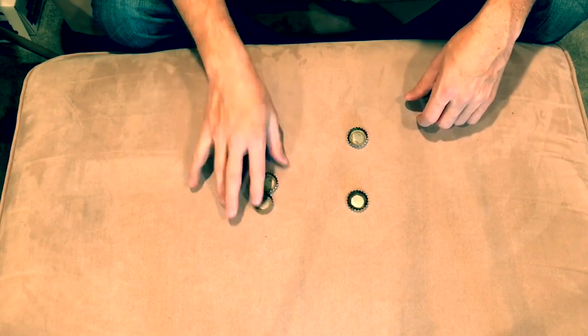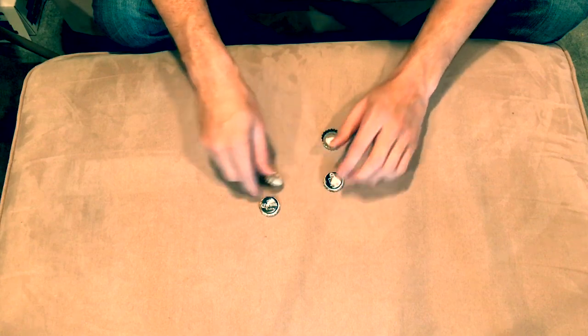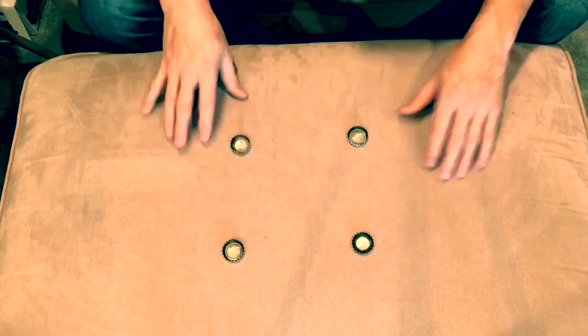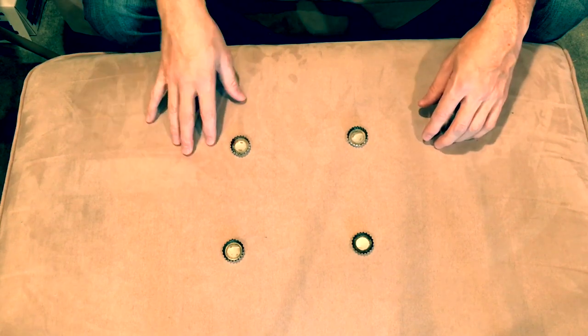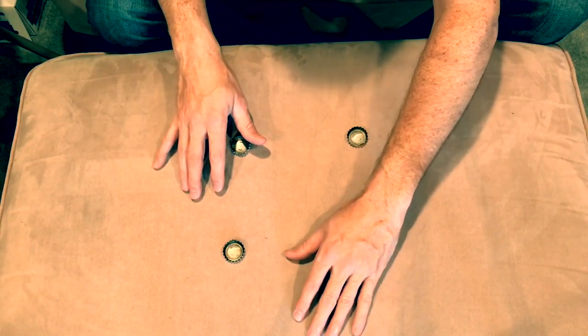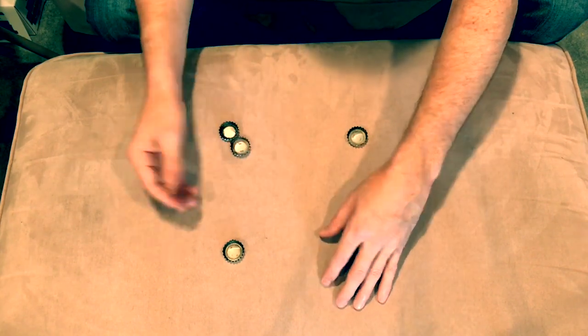The way the trick works is you start with one palmed and you can pretty freely move your hands around. You place them into four corners. Then what you'll do is when you cover this one, you're going to palm that one and pick it up. At the same time you're going to put this one down and shake your hand like that.